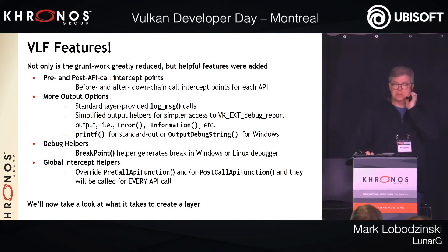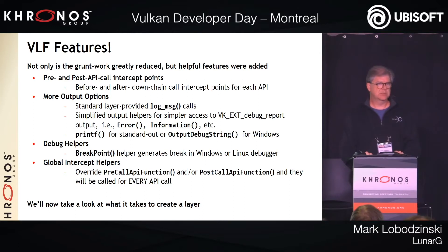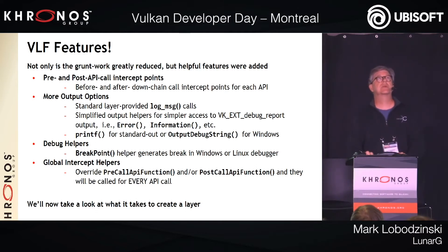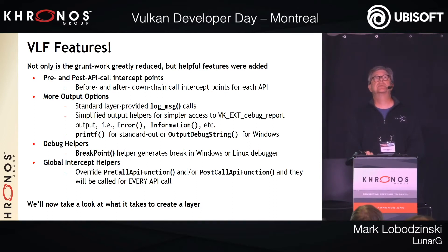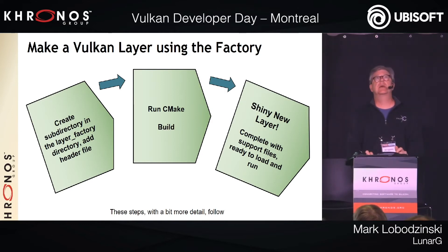In addition to abstracting the infrastructure, the layer factory provides helper functions — pre and post call points, much easier output functions, debug helpers, and a couple of helpers so that if you want to intercept every API call you can just overload that function automatically. To actually create a layer, you just create a subdirectory, put a file or two in there, run CMake, and a layer comes out. It's almost actually that simple.